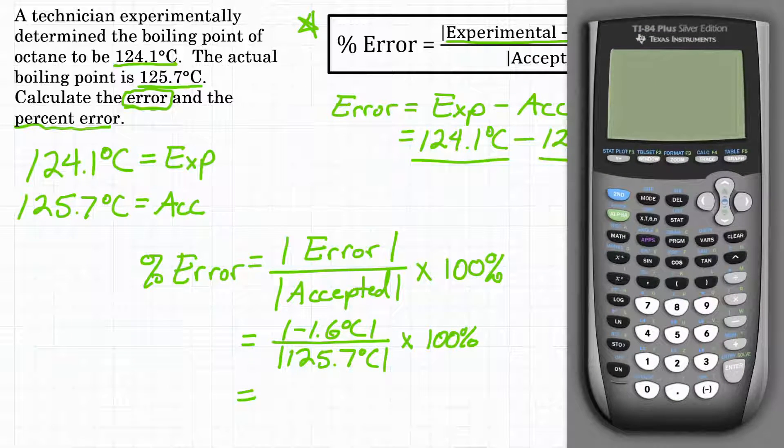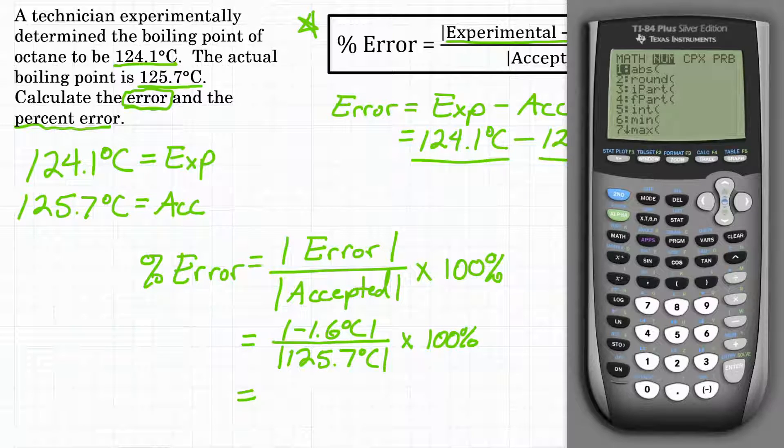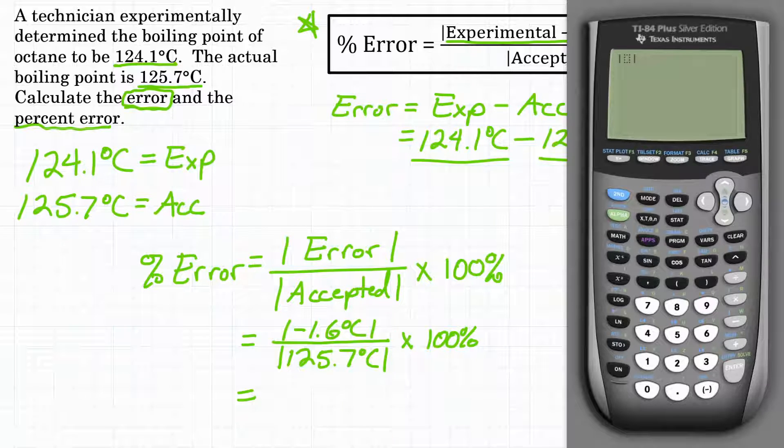Now, if you have a graphing calculator, there should be a button to use for absolute value. On a TI-84, if you hit the math button, and then you go over to the right, number one says ABS, open parentheses, that stands for absolute value. So if you hit enter, you should see the absolute value bars in your calculator.